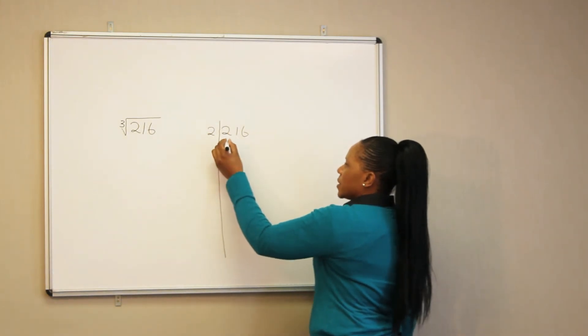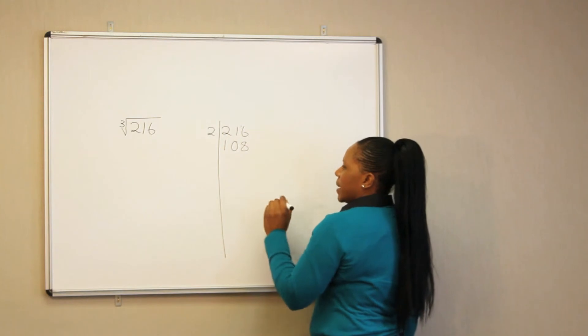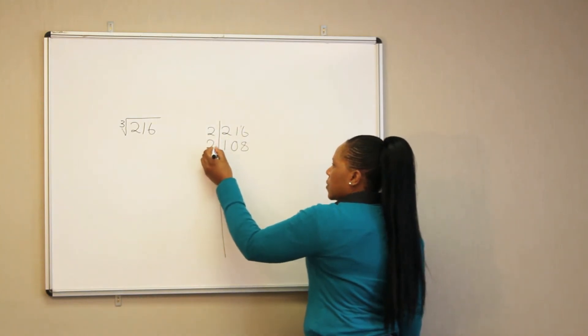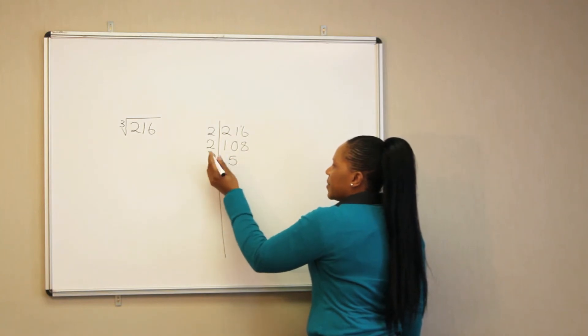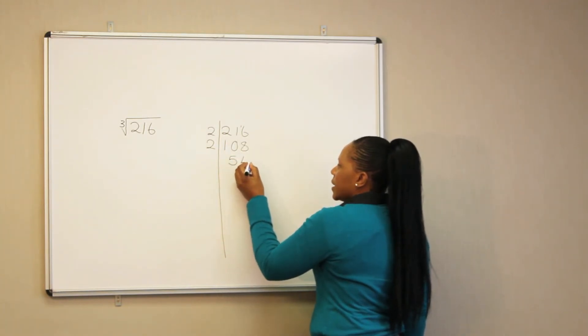2 into 2, it goes 1. 2 into 1, 0. 2 into 16, it goes 8 times. 2 can go into 108. 2 into 10, it goes 5 times. 2 into 8, it goes 4 times.